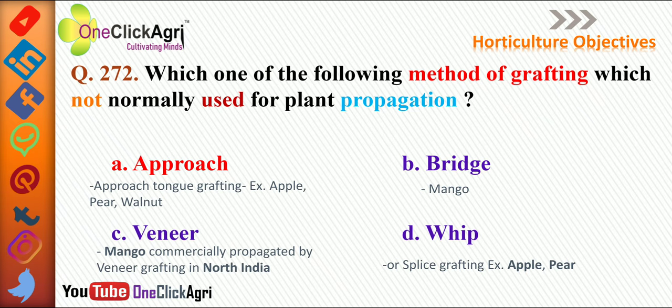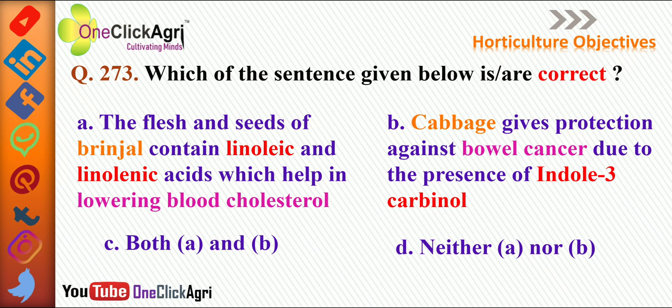Next question: Which of the following statements is correct? Statement A: the flesh and seed of brinjal contain linoleic and linolenic acid, which helps in lowering blood cholesterol — this is correct. Statement B: cabbage gives protection against bowel cancer due to the presence of indole-3-carbinol — this is also correct. Therefore, the right answer is both A and B.